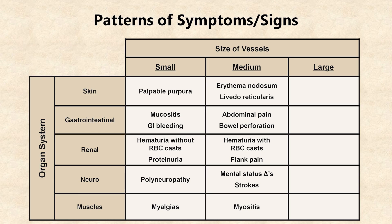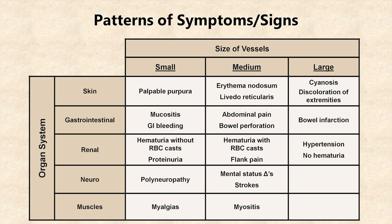A large vessel vasculitis can result in cyanosis and discoloration of the extremities, bowel infarction, hypertension from involvement of the aorta or renal arteries but no hematuria, strokes from involvement of the carotids, and claudication, which is pain in the extremities due to lack of blood flow.